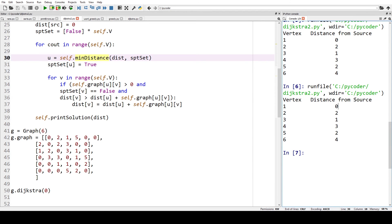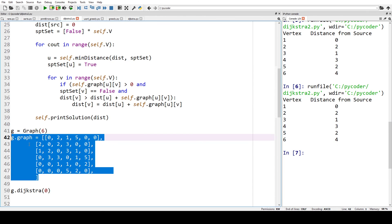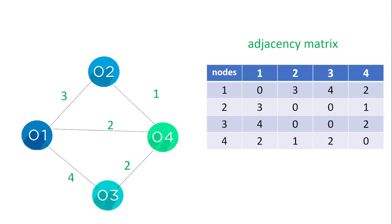The main part to explain is how we define our graph. Looking back at our slides, we defined our network using an adjacency matrix. Node 1 has no cost to itself, but a cost of 3 to node 2, a cost of 4 to node 3, and a cost of 2 to node 4. Whenever a node is connected to another we put in the cost, and if it's not connected — like to itself — we put in 0.